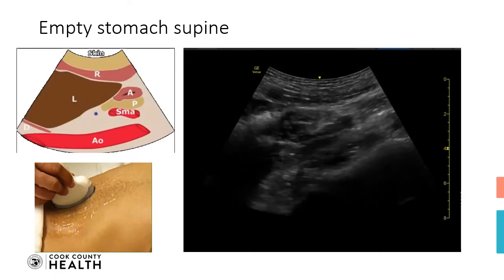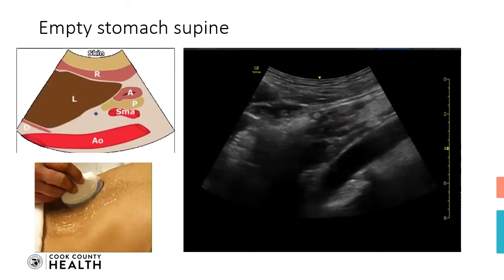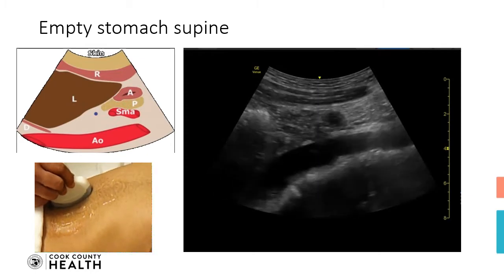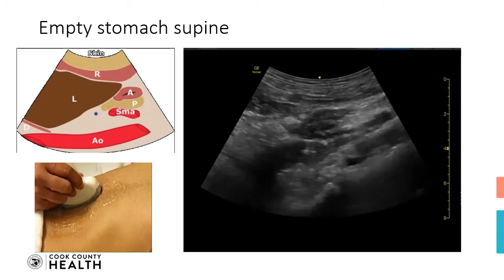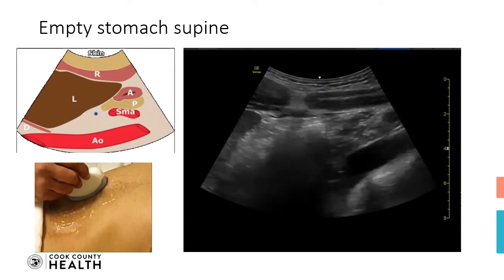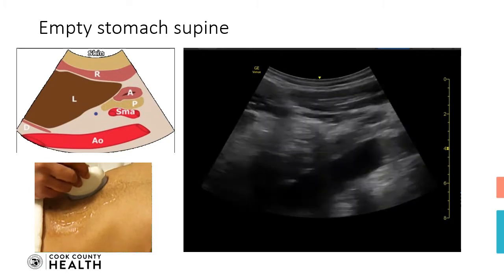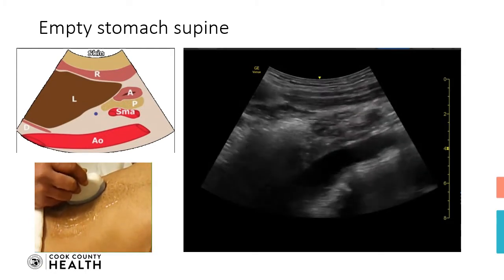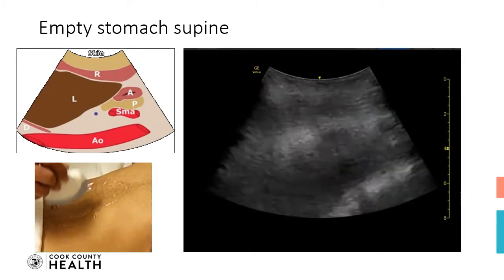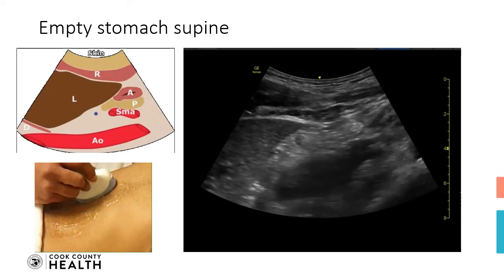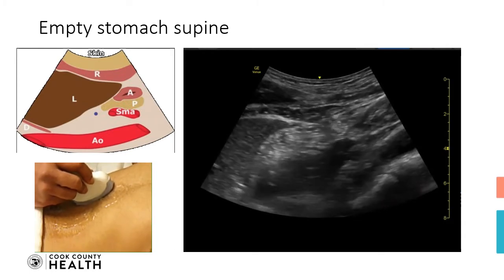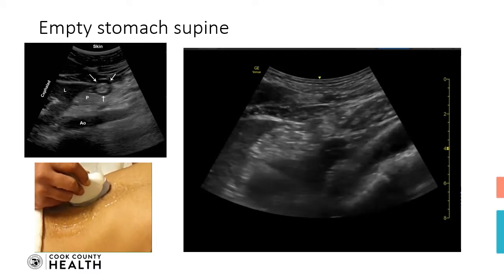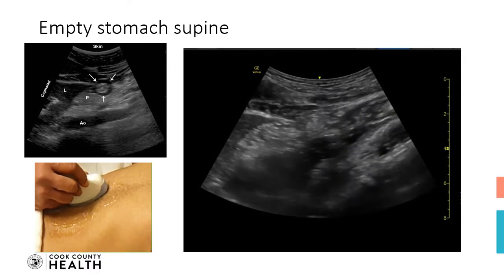You should be able to identify the liver. I can see the liver coming into the picture now. Just posterior to the liver will be a rounded structure, which is the antrum of the stomach. That's where the antrum is.